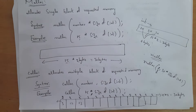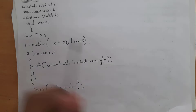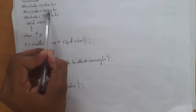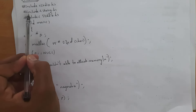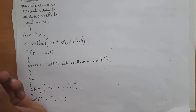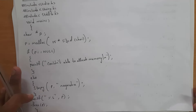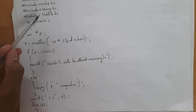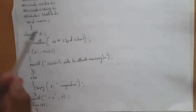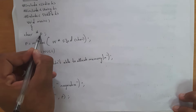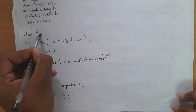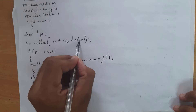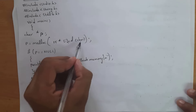Now I will explain programs for this. This is the program for malloc function. First I written #include <stdio.h>, after that #include <string.h> because I am using string in this program, and next #include <stdlib.h> — as I already said, malloc is present in stdlib.h. After that I written void main. Inside void main I declared a character pointer 'p' and then written p = malloc(15 * sizeof(char)).